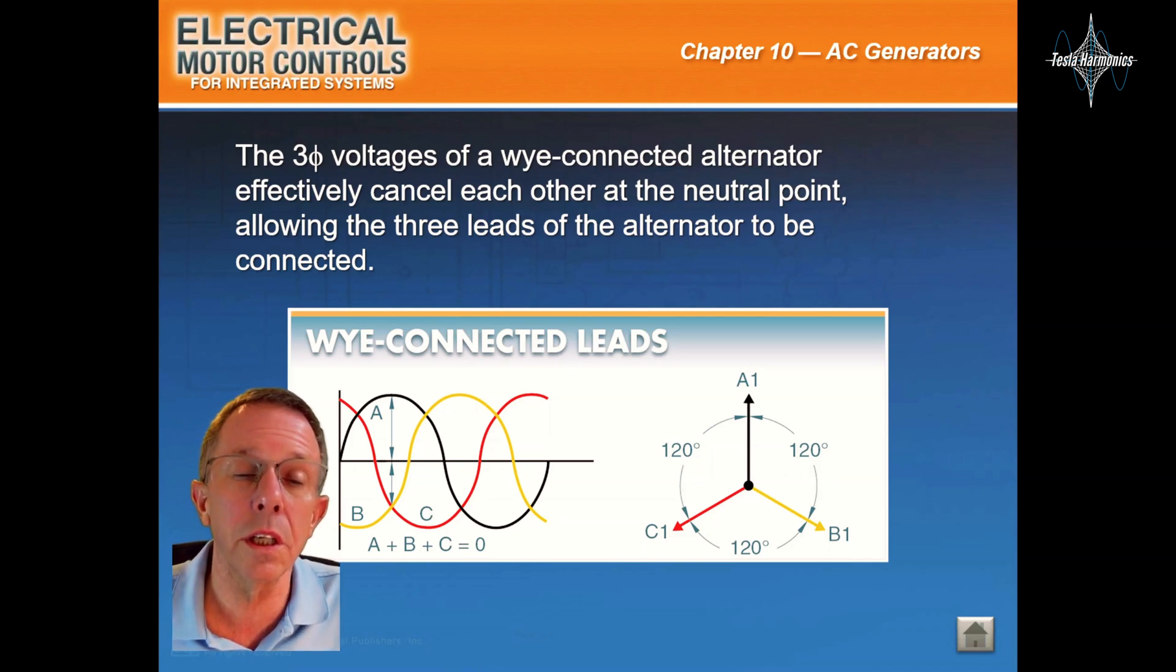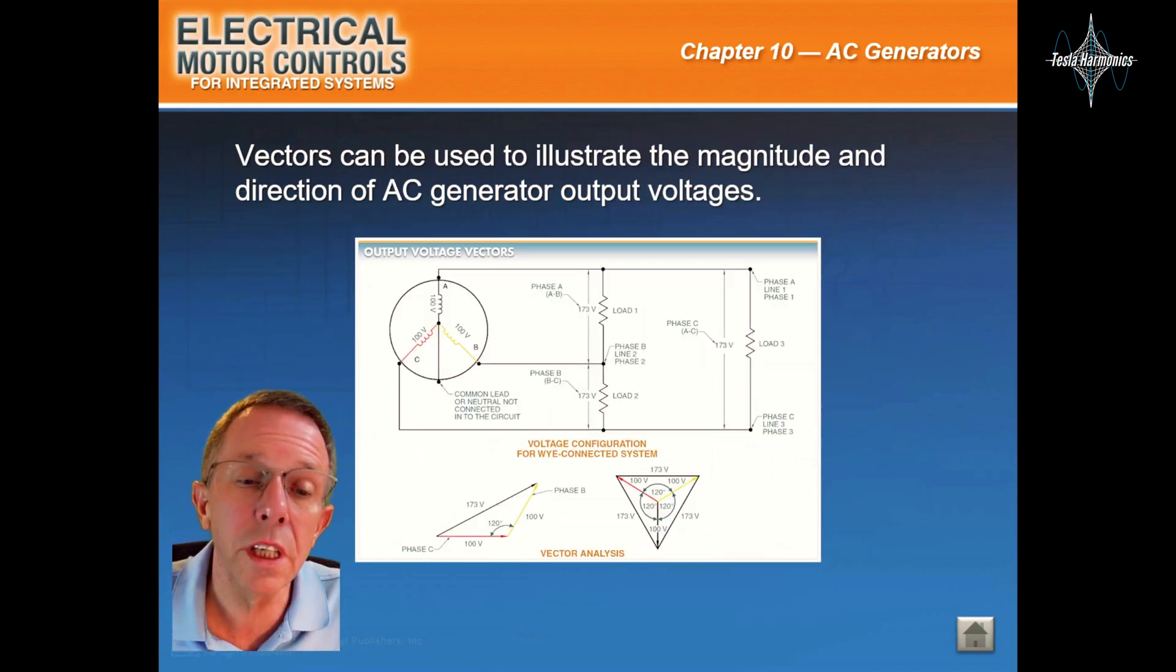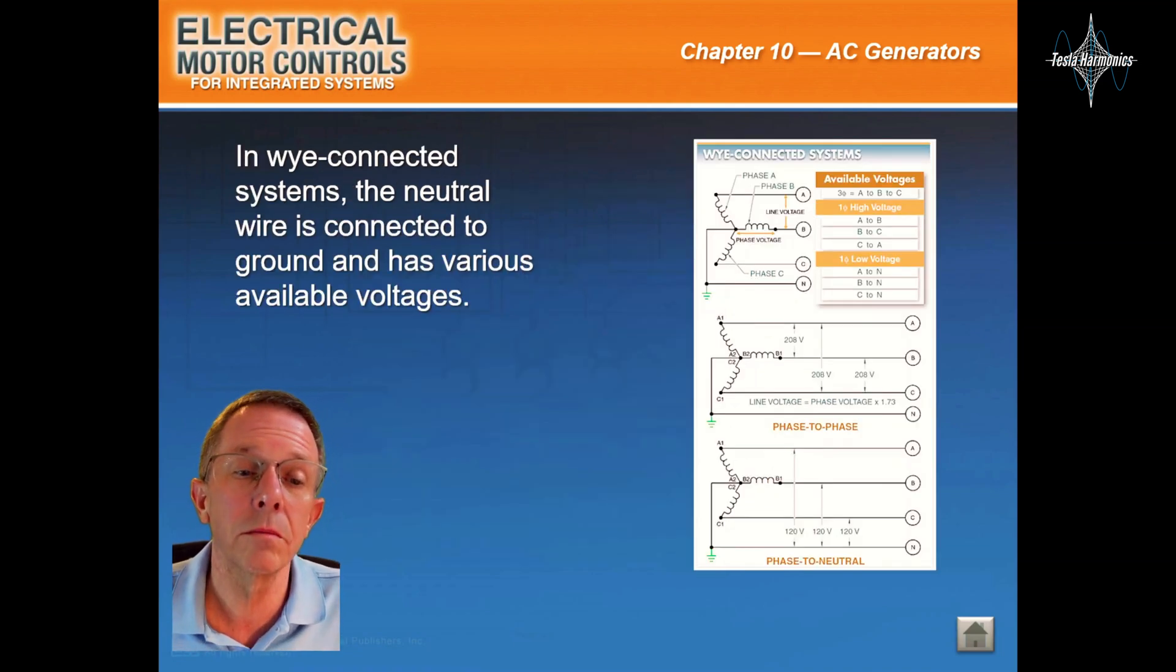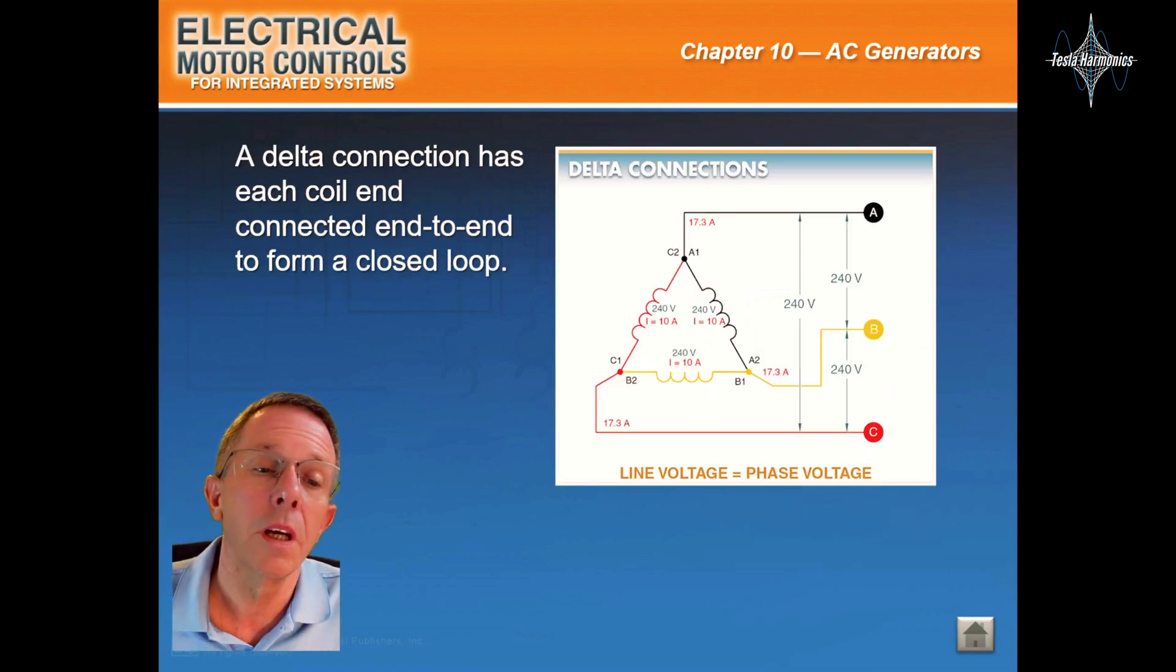Vectors can be used to illustrate the magnitude and direction of AC generator output voltages. In Y-connected systems, the neutral wire is connected to the ground and has various available voltages.